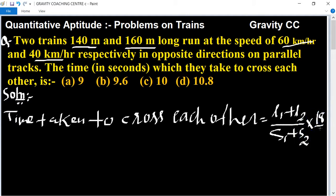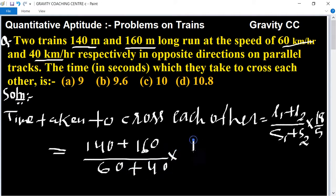Now put all the values. Length one is 140 and length two is 160. In the case of opposite directions, speed is 60 plus 40 into 18 upon 5.